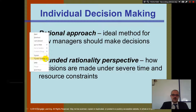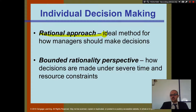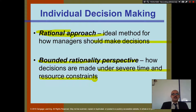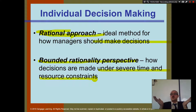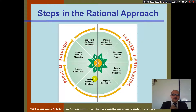For individual decision making, there are two types. The rational approach identifies methods for how managers should make decisions. The bounded rationality perspective describes how decisions are made under severe time and resource constraints. You can't always make the best decision because you don't have enough time or resources — like in your projects where you chose the easy way because there was limited time or you lacked all the resources needed.